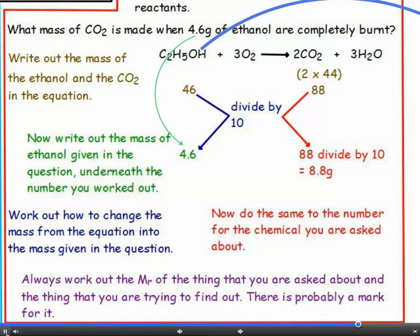Now, do the same to the other number, so here you divide 46 by 10 to turn it into 4.6, so you must do the same to the carbon dioxide number, 88 divided by 10 is 8.8 grams.